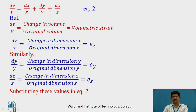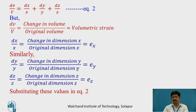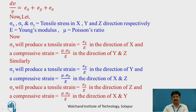We know dV/V is change in volume upon original volume, that is volumetric strain, and dx/x is change in dimension in the x direction divided by original dimension in the x direction, which is ex — strain in the x direction. Similarly, dy/y is ey (strain in y direction) and dz/z is ez (strain in z direction). Substituting into equation 2, we get delta V by V equals ex plus ey plus ez.